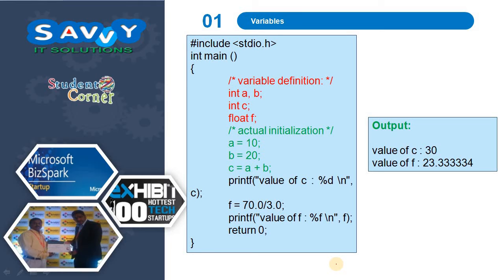Let us look into a small example. The first four — int a, b, c, float c — are the variable definitions. We then initialize the values for the already defined variables: a = 10, b = 20, c = a + b. We are printing the value of c. Similarly, f is assigned some calculation and that value is stored in f and printed. This is the way we define and initialize variables.